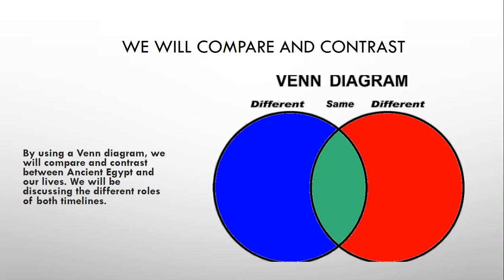We're going to be researching and finding more about the roles that they had in ancient Egypt, and we're going to compare it with the roles that we have nowadays. We're going to see the similarities and differences of both the past and the present, and both timelines, by documenting our information using a Venn diagram.